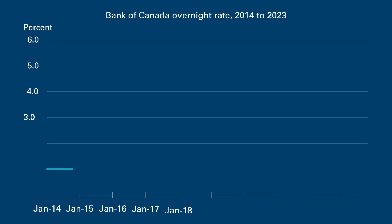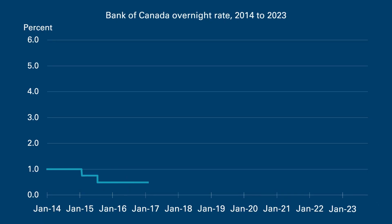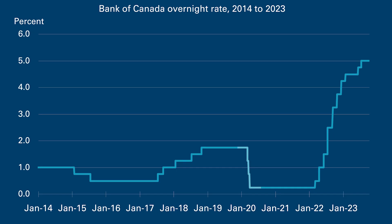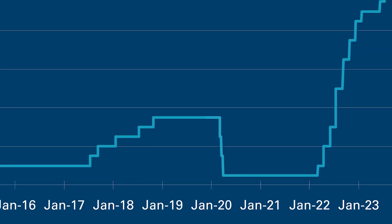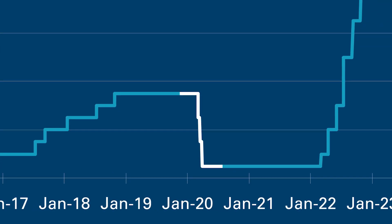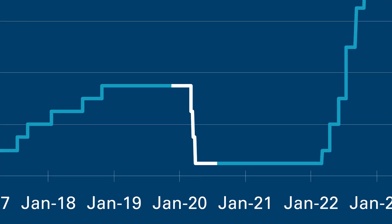In response to inflationary pressures in 2022 and 2023, the Bank of Canada lifted its policy interest rate as shown to the right of the figure on the screen. When it felt that the economy would need a boost at the beginning of the pandemic, it lowered the overnight rate as shown on the chart in early 2020.